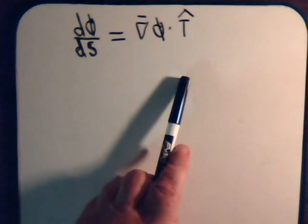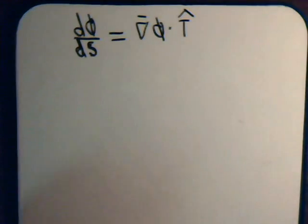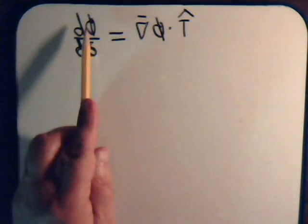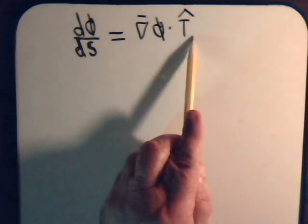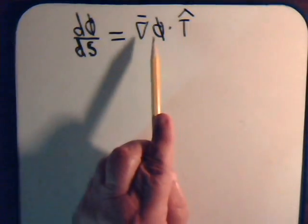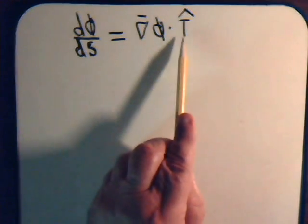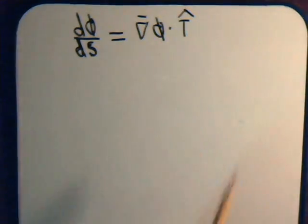This is the equation that we derived in our previous video. This tells us that the rate of change of a scalar in the direction of a tangential vector t is equal to the projection of the gradient vector onto that unit tangential vector.